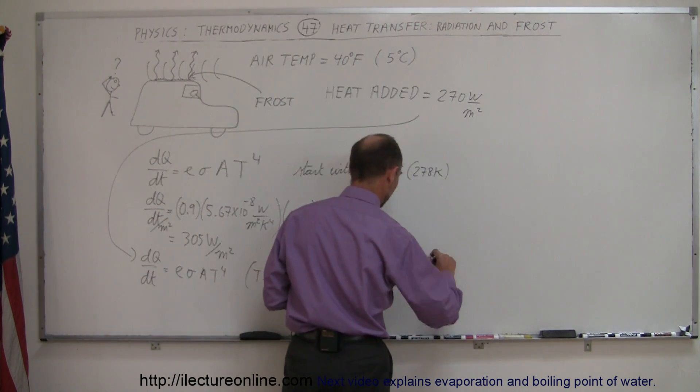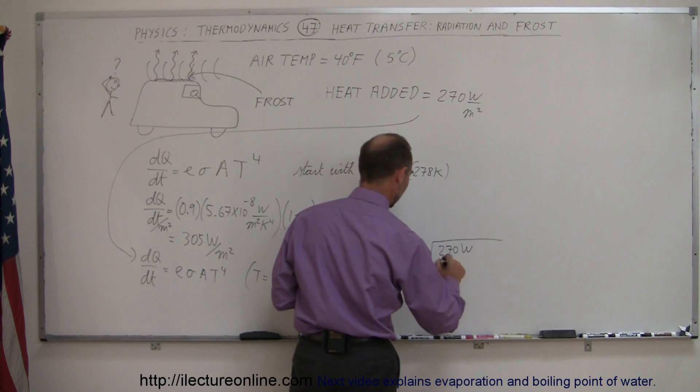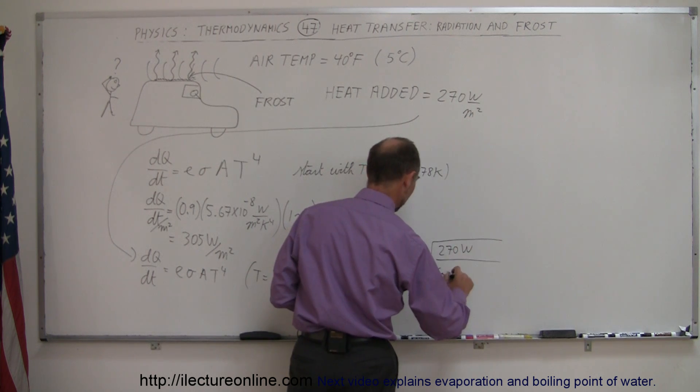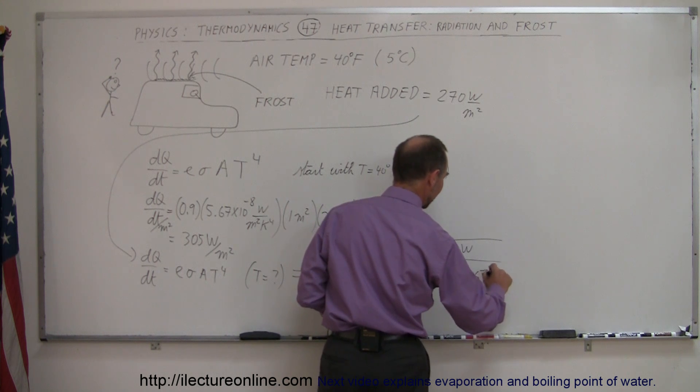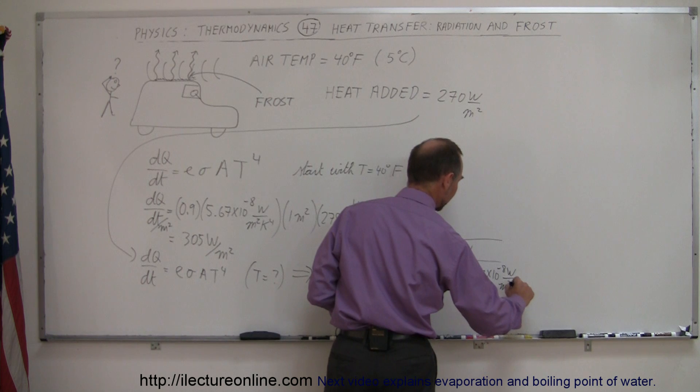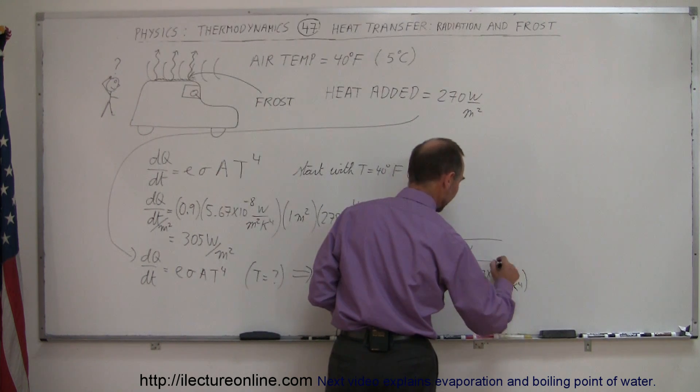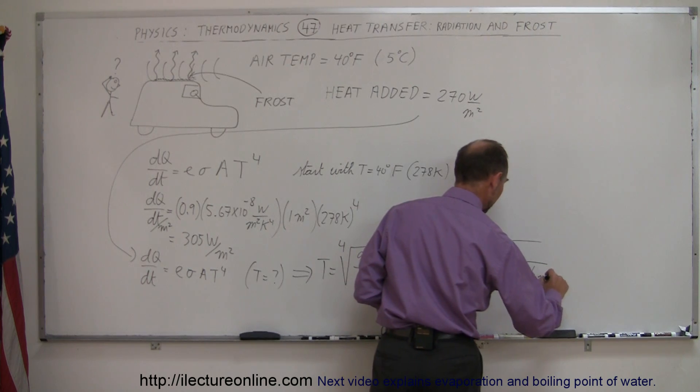So this equals the fourth root of 270 watts divided by 0.9 divided by 5.67 times 10 to the minus 8 watts per square meter Kelvin to the fourth power, times the area, which is 1 square meter.